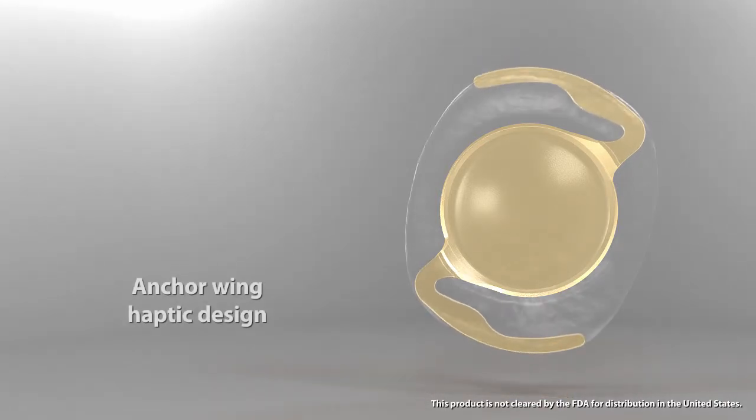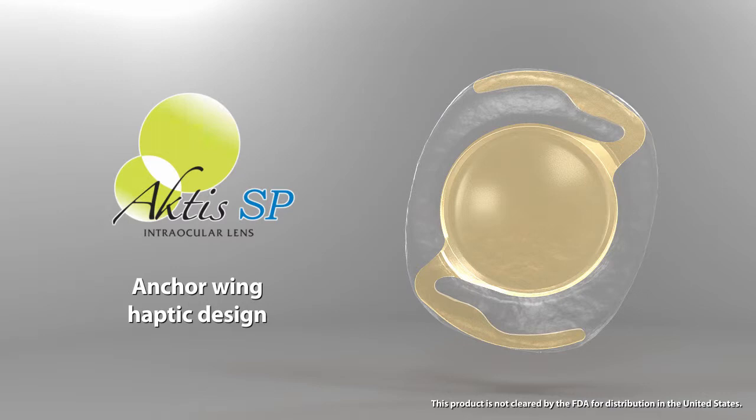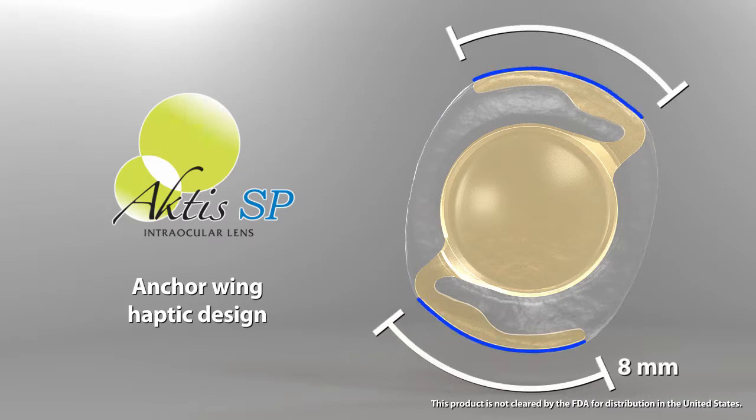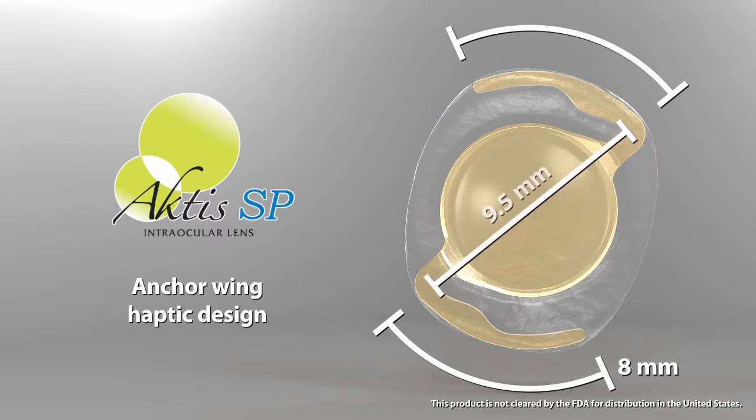The anchor wing haptic design is unique to the Actis SP. An arc length of over 8 millimeters enables a wider contact area between the IOL haptic and the capsular bag. The distance between the haptic shoulders is 9.5 millimeters, which enables stable fixation and avoids IOL decentration or tilting.